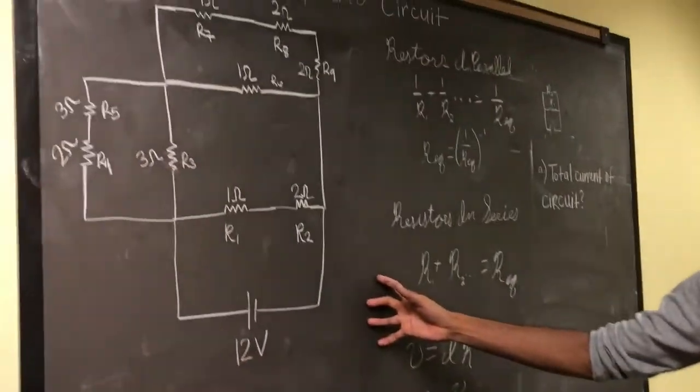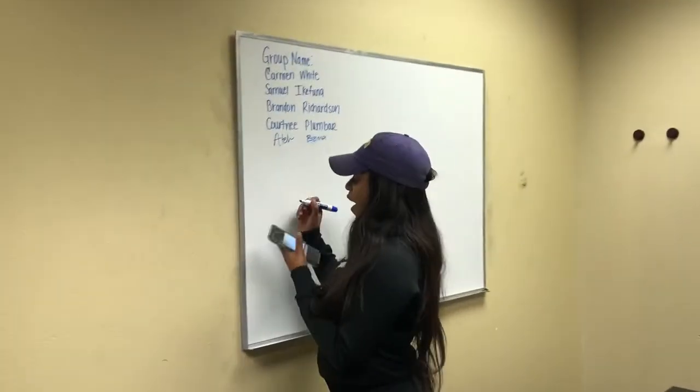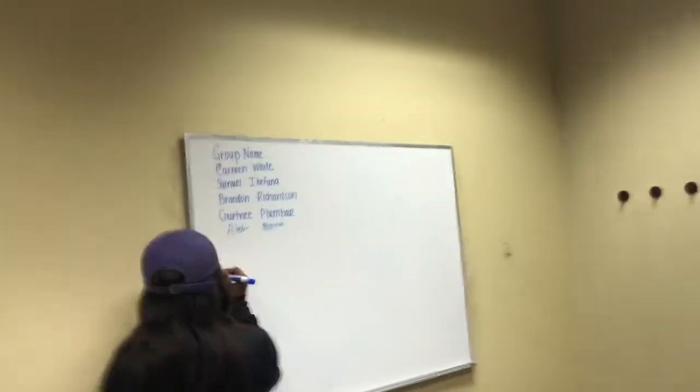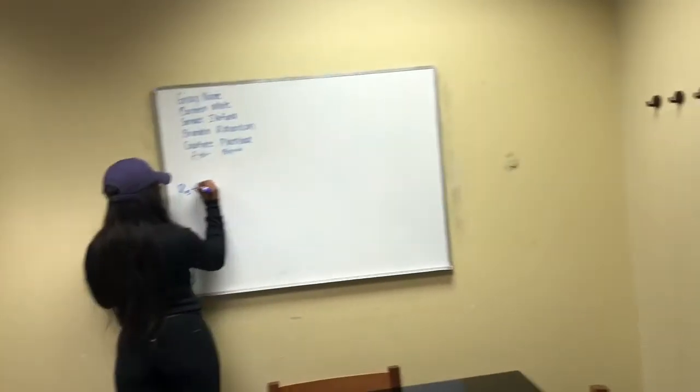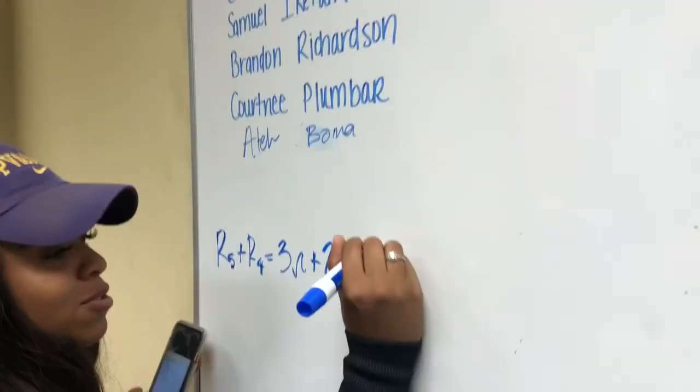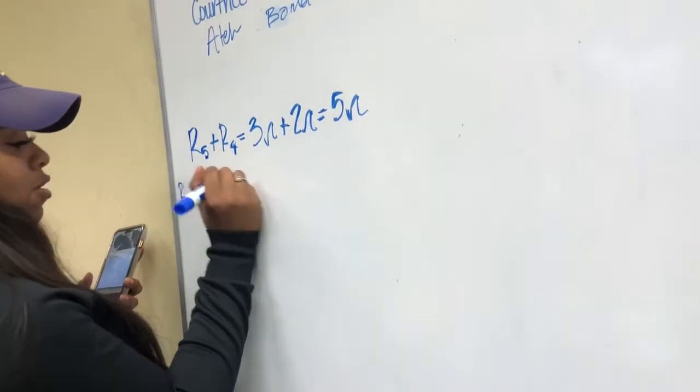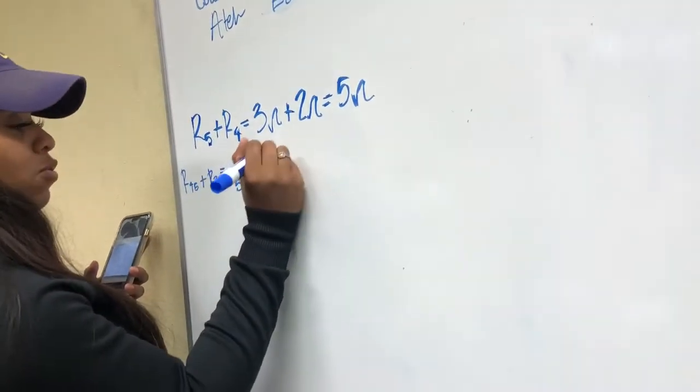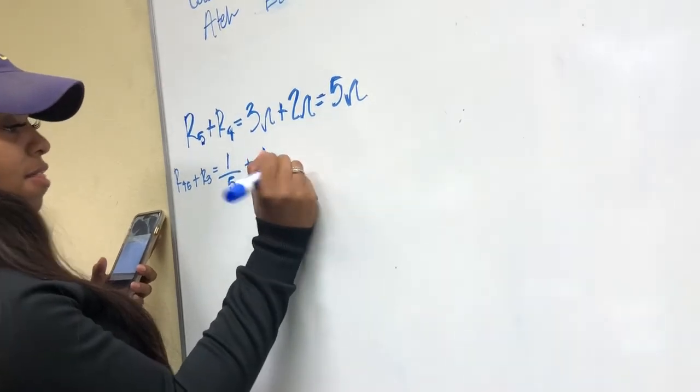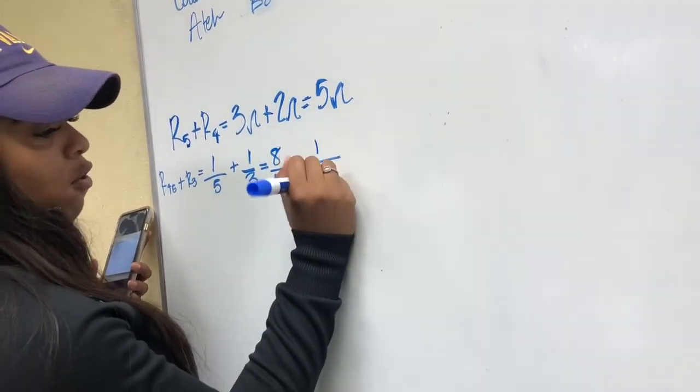And from here, we're going to give it to Cameron, and we're going to solve for a section of the circuit. Okay, for R345, it would be R5 plus R4, and that's equal to 3 ohms plus 2 ohms, and then that is equal to 5 ohms. And then R445 plus R3, that will be equal to 1 over 5 plus 1 over 3, and then that is equal to 8 over 15, and then that is equal to 1 over R.